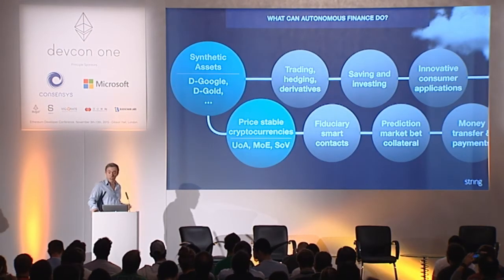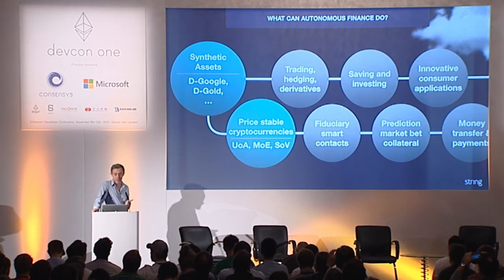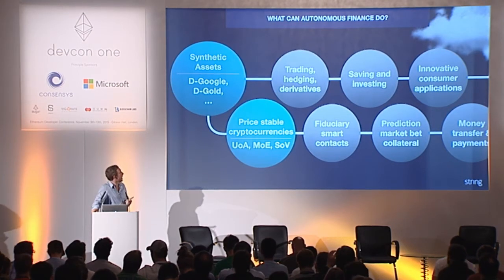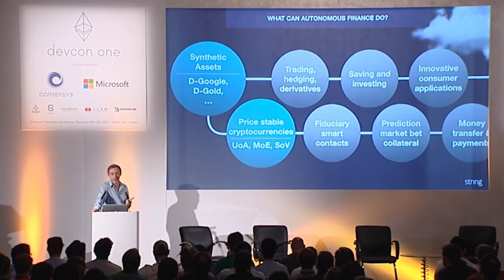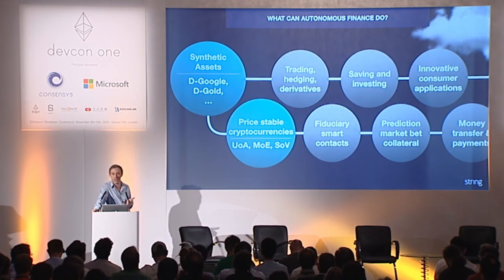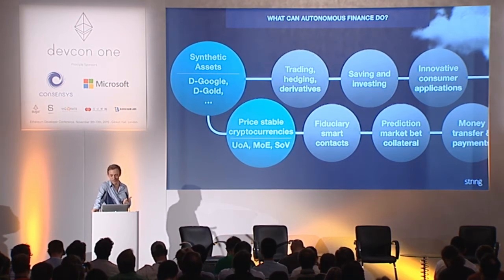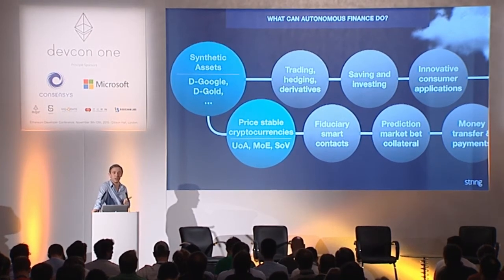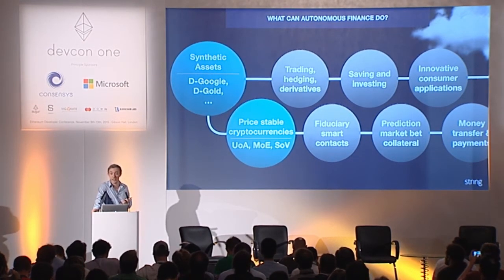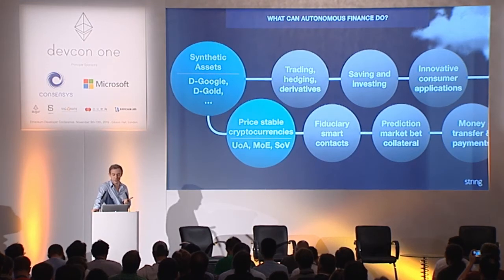What does autonomous finance do? Once we have synthetic assets such as D-Google and D-Gold, we can enable decentralized trading, hedging, derivatives, and that kind of thing. People can use them for saving and investing, and we can create all kinds of interesting, innovative consumer applications.